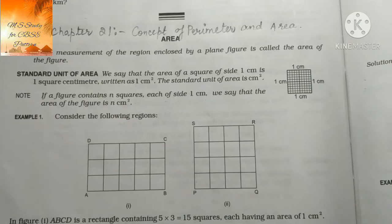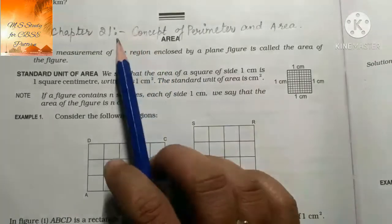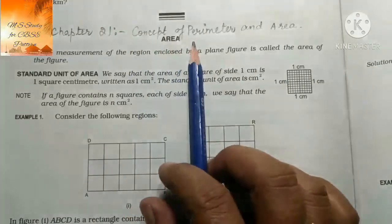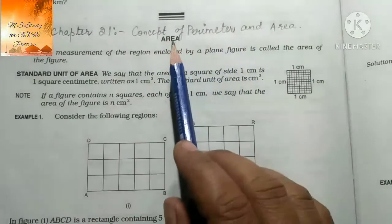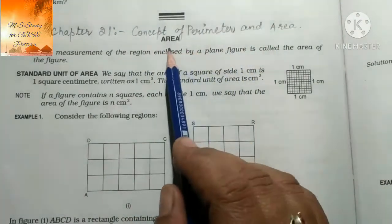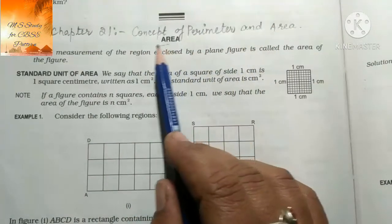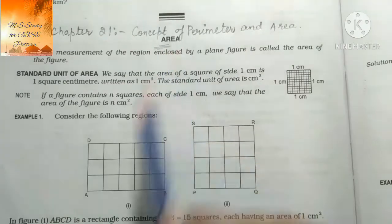Hello everyone, welcome back to my channel MS Study for CVSC Pattern. Today I am going to start Chapter 21, Concept of Perimeter and Area, and today we are going to start Area.